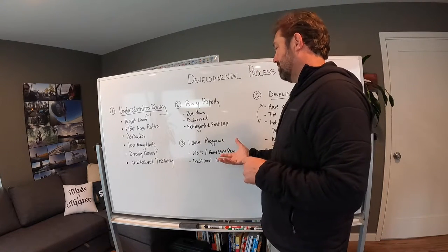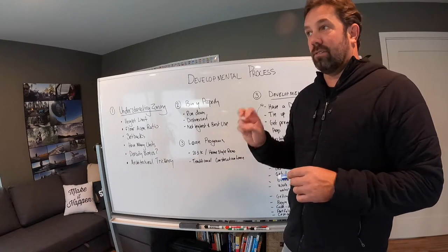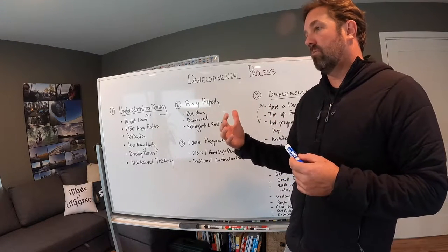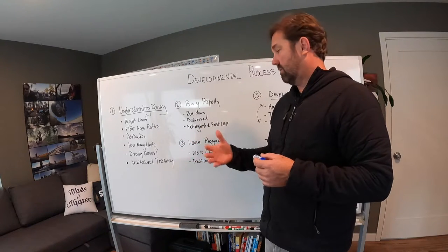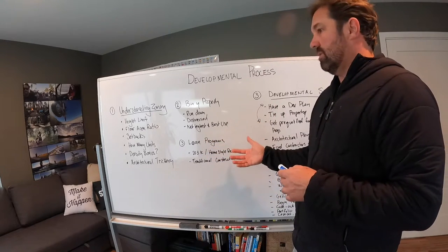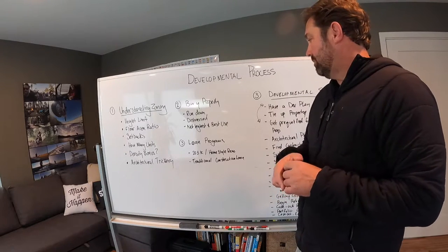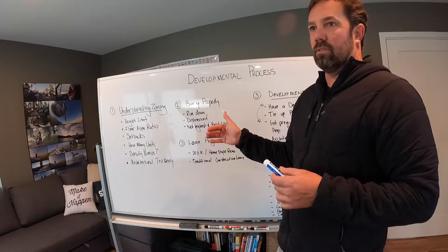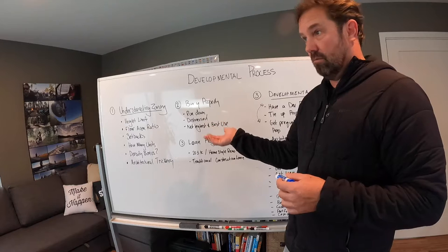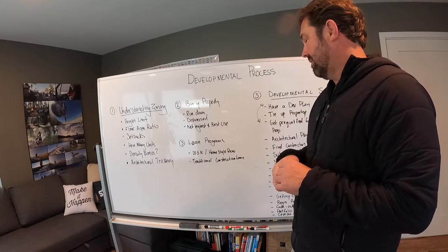Understanding the loan programs: the 203k and the homestyle renovation loan are fixer-upper loans that allow you to economically build up to four units — whether it's a single family house you're buying and adding a few units. You can go up to four units with 3% down financing, and it generally goes up to $1.2 to $1.3 million to build whatever you're going to build. So if you can build four units for that, you build four; if you can only build two or three, you add the additional units.